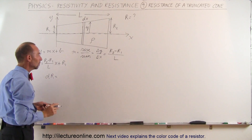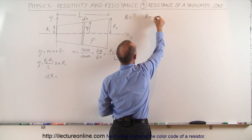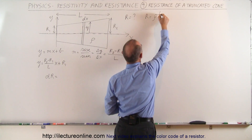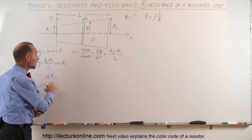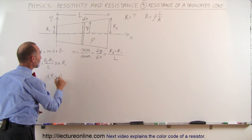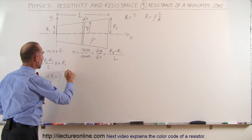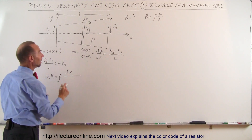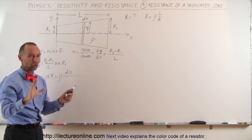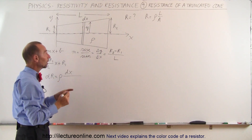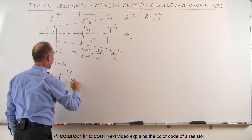We can say that the small little resistance dR is equal to — remember the equation for resistance — R is equal to the resistivity times the length over the cross-sectional area. So using that here, dR is going to be the resistivity, which is a constant, times the length, which is going to be dx, divided by the area. Now what is the area of this little section? It's a circle, so it would be pi r squared; in this case r is y, so it would be pi times y squared.